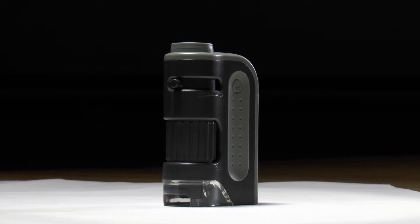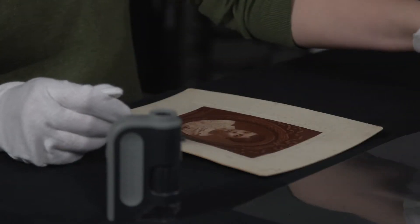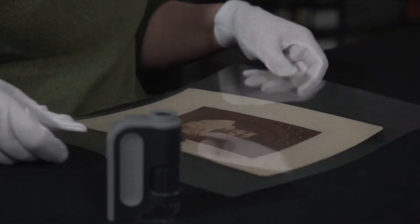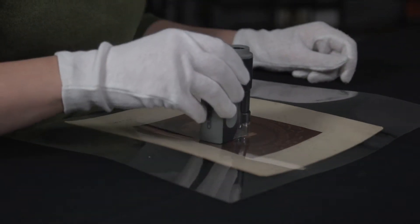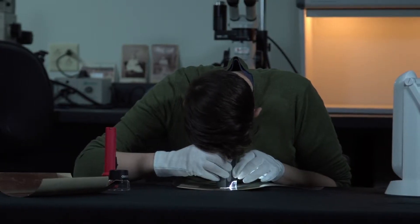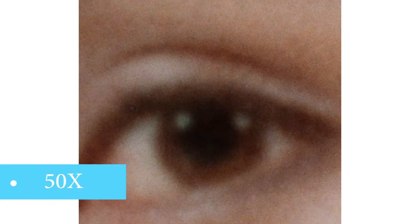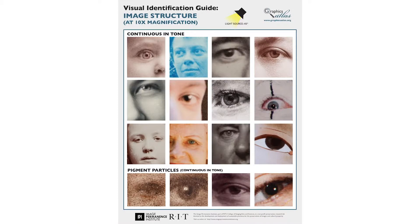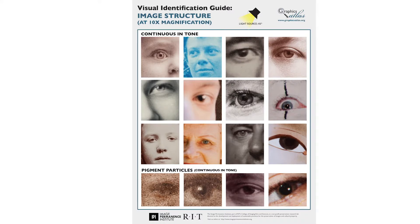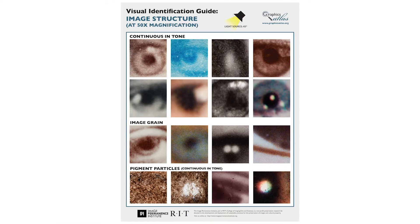30x to 50x magnification allows you to see the image structure more clearly, achievable using a pocket microscope or a stereo microscope. If using a pocket microscope, place a piece of polyester sheeting on the surface of the print first to avoid abrasions. Some processes require higher magnification of 50x for identification. At this level of magnification, the image grain of color prints is visible, and the grain correlates to the way in which the image was formed.